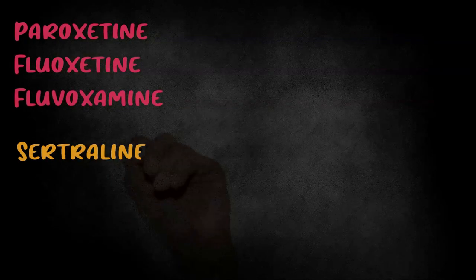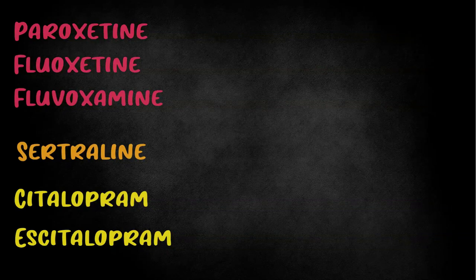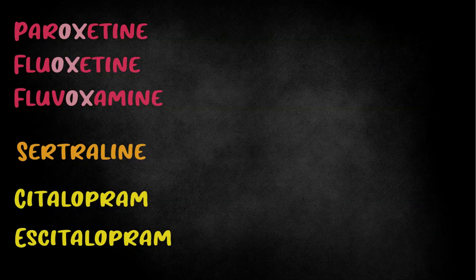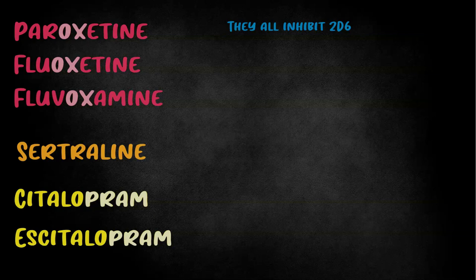Let's list the SSRIs: paroxetine, fluoxetine, fluvoxamine, sertraline, citalopram, and escitalopram. With four easy-to-remember facts, you're going to know all the key CYP interactions of the SSRIs. I've split these SSRIs into three groups: the 'ox' drugs — paroxetine, fluoxetine, and fluvoxamine — then the 'prams' — citalopram and escitalopram — and sertraline is kind of in the middle. Fact one: all SSRIs inhibit 2D6 — the oxes, the prams, sertraline — all of them.